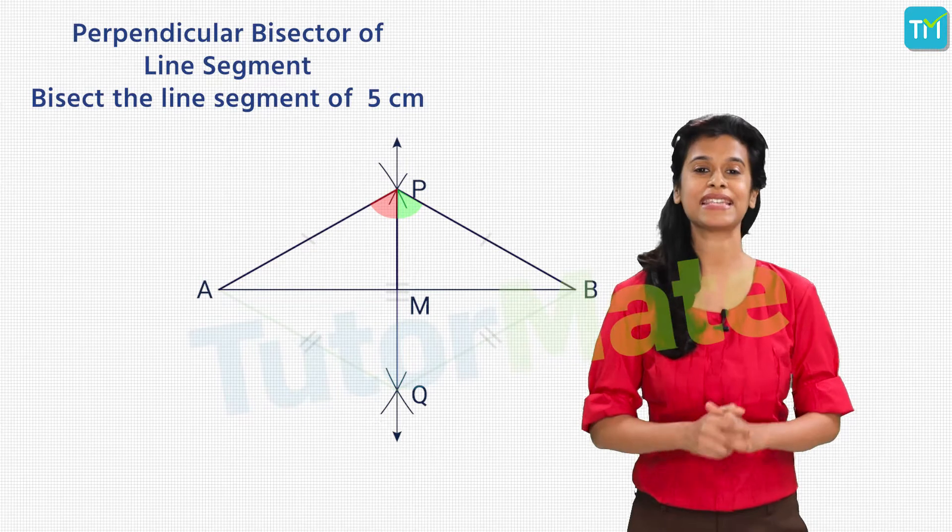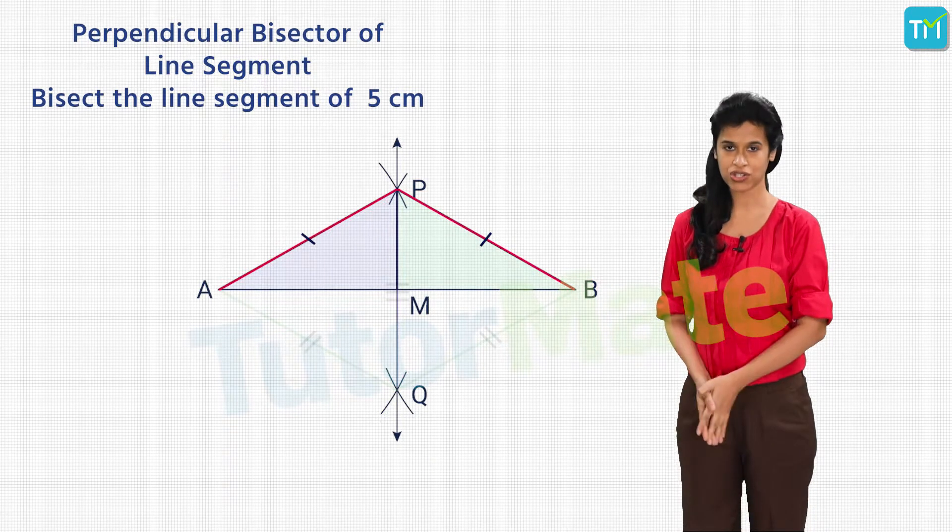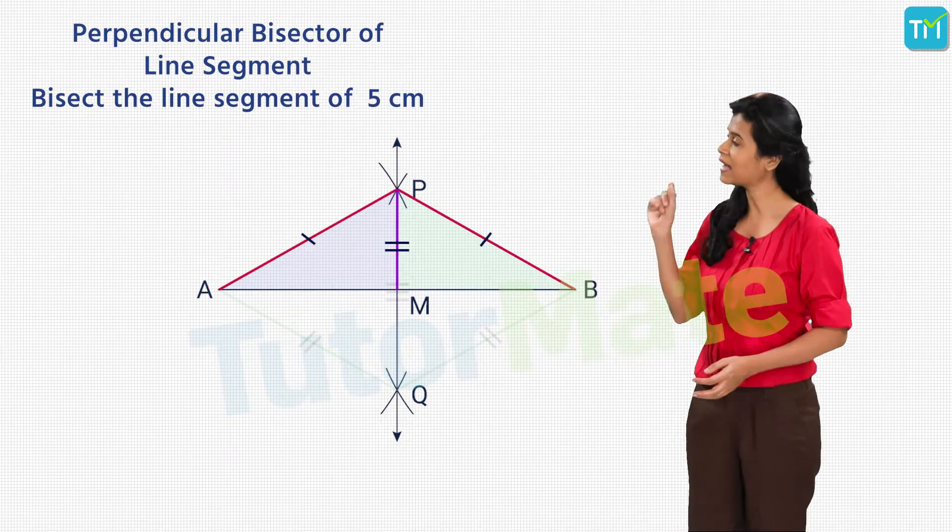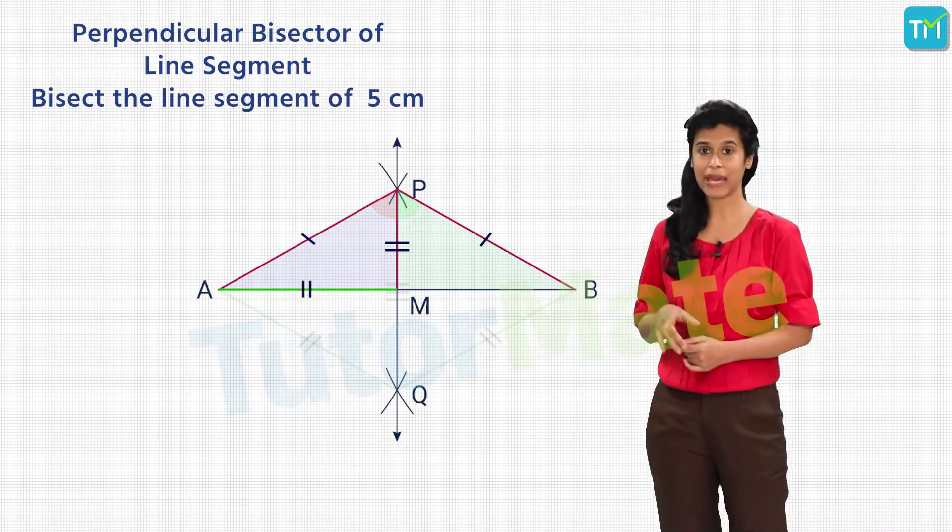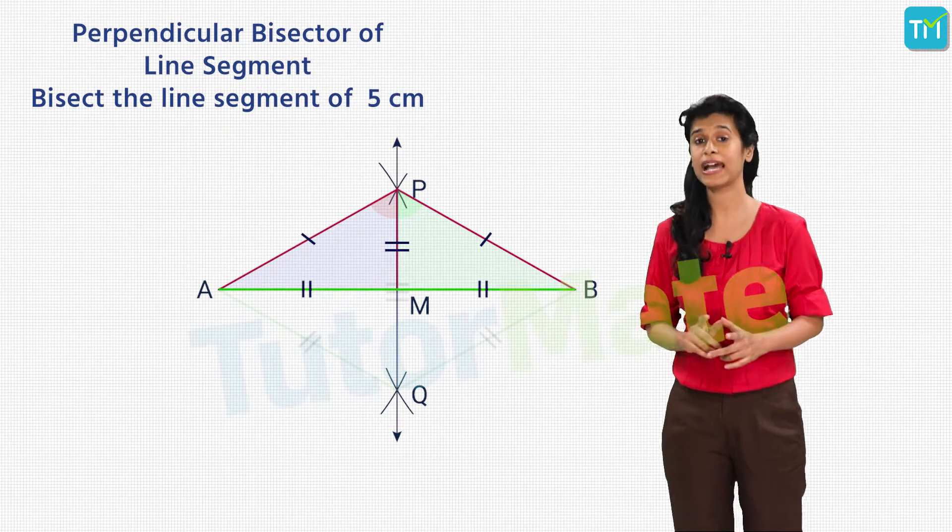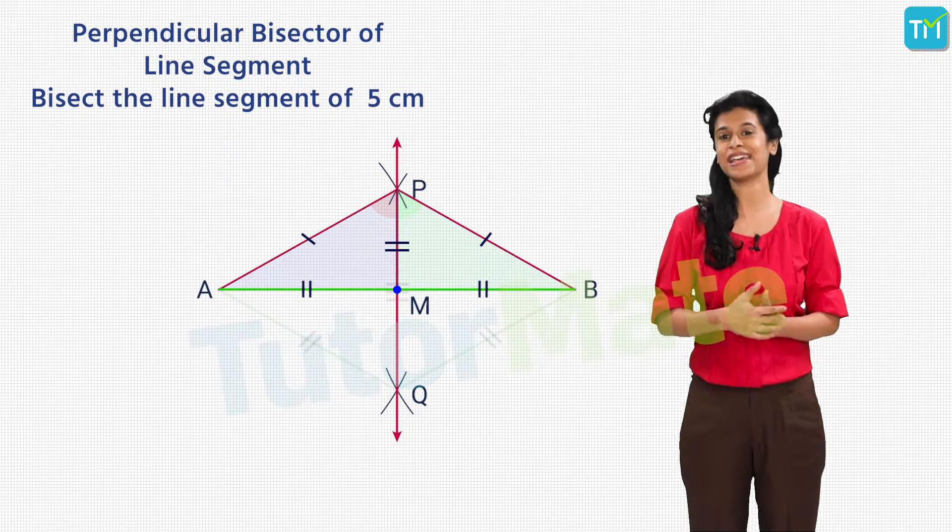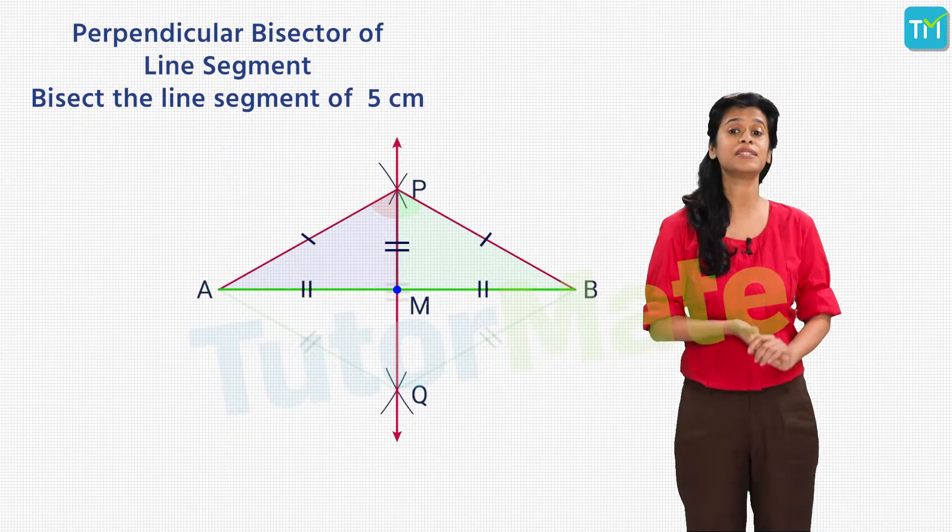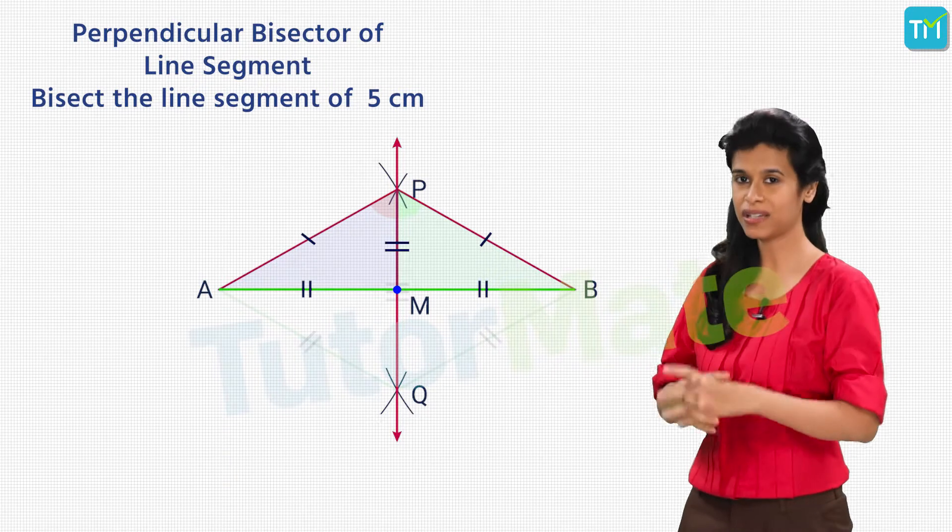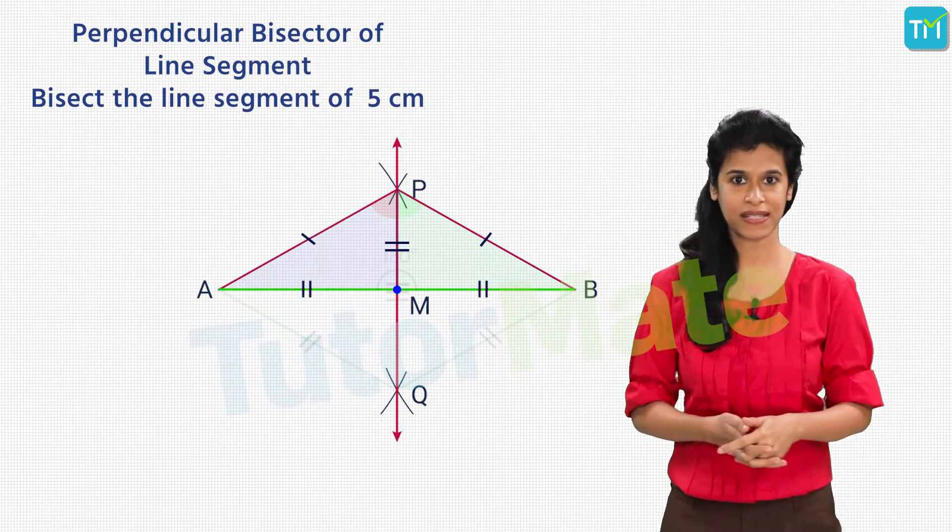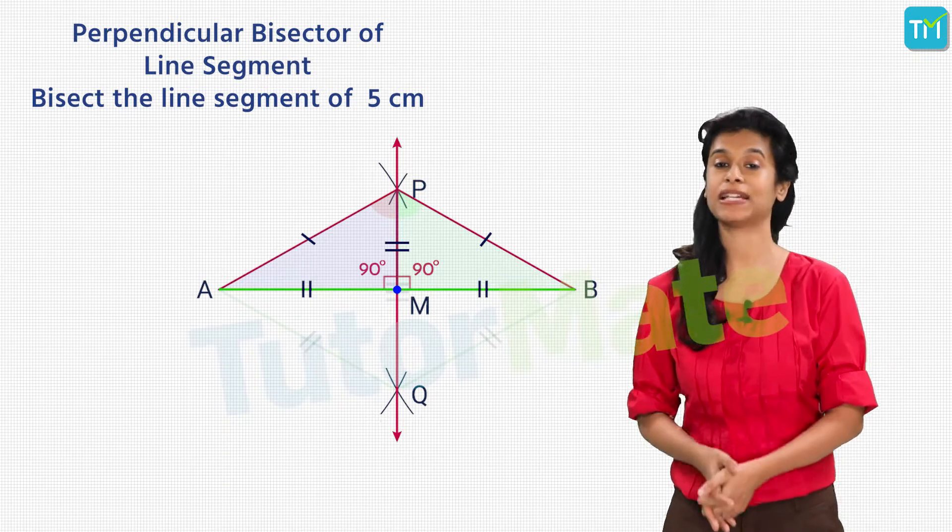Now, let us look at triangles APM and BPM and prove their congruency. Again, AP and BP are equal by our construction. PM is a common side and angles APM and BPM are equal as we just proved. So, the sides AM and BM are equal by CPCT, inferring that M is the midpoint of AB or PQ bisects AB. Now, using the same congruency we can also infer that angles PMA and PMB are equal. If we look at them, we will see that they form a linear pair. So, they must add up to 180 degrees. This proves that each angle must be 90 degrees. Hence, PQ is the perpendicular bisector of AB.